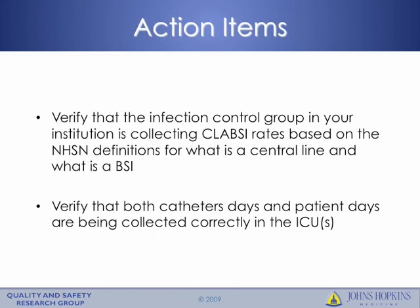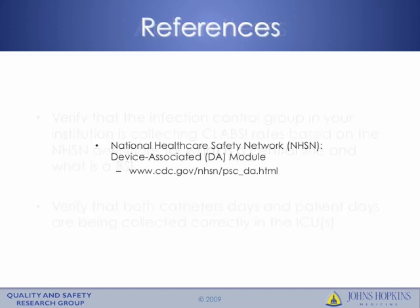The action items for this module are short but very important. You must verify that the infection control group in your institution is collecting CLABSI rates based on NHSN definitions for what constitutes a central line and what is a BSI. In addition, verify that both catheter days and patient days are being collected correctly in the intensive care unit. Thank you and good luck in applying NHSN definitions to calculate CLABSI rates. For more information and a more complete description of what this module covers, visit the CDC's NHSN website where additional information is located.